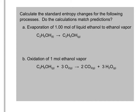Let's take a look at our first system, which is the evaporation of one mole of liquid ethanol to ethanol vapor. In an evaporation, we're changing a liquid to a gas. Looking at the guidelines as we outlined in the last video, when you change the state of a substance going from solid to liquid to gas, you have more disorder. So when you're evaporating a substance and going from a liquid to a gas, you would expect the entropy to increase.